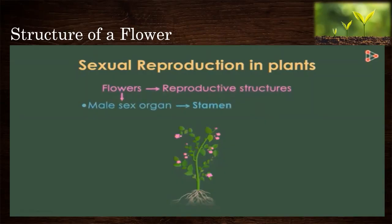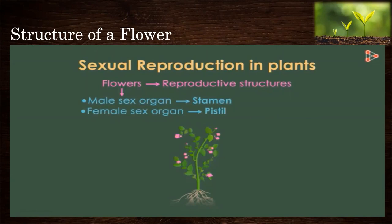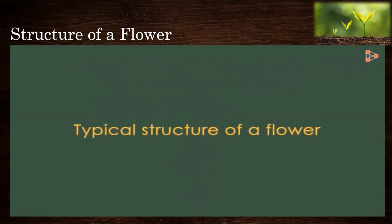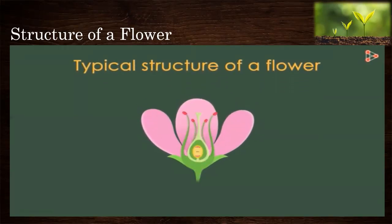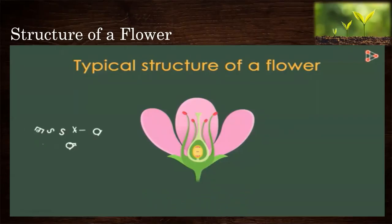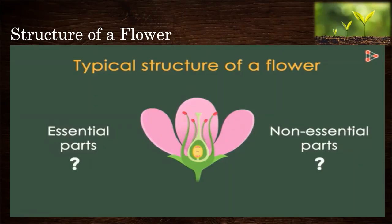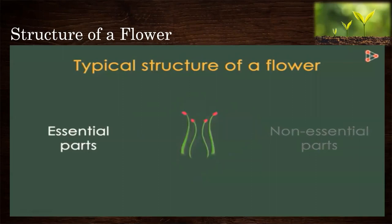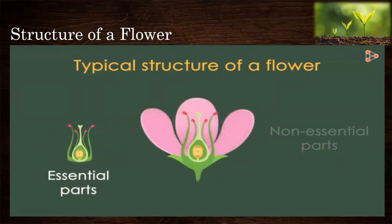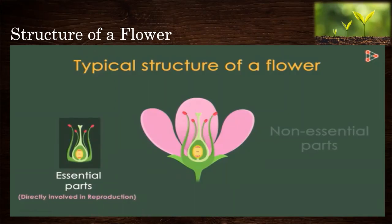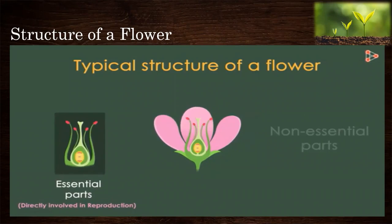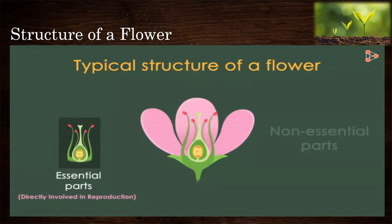In a flower, the male sex organ is called the stamen and the female sex organ is called the pistil. A flower has two main components: the essential and non-essential parts. The stamen and pistil are the reproductive parts and are called the essential parts, because they are directly involved in the process of reproduction. Without these structures, a plant would not be able to reproduce.